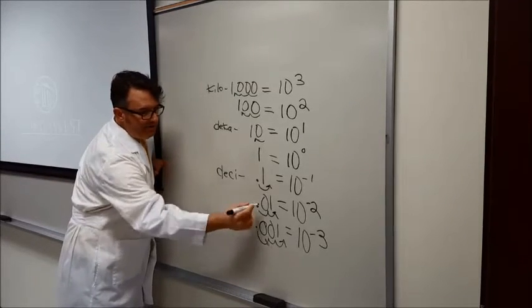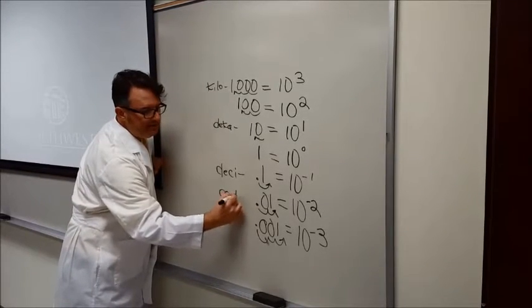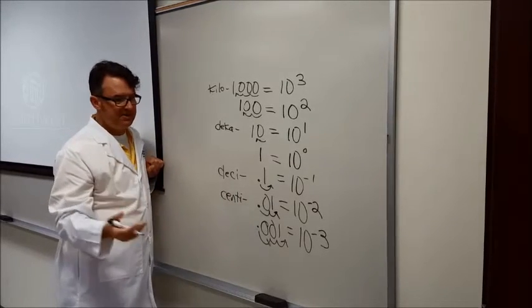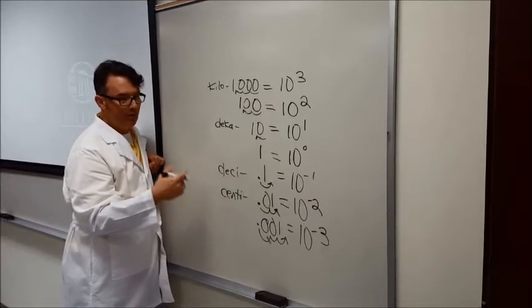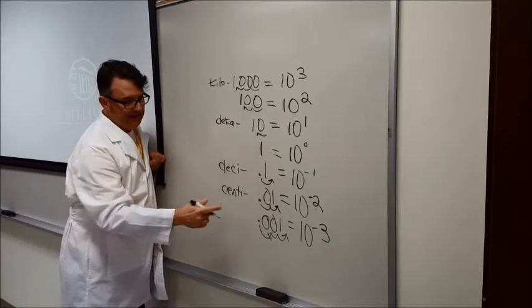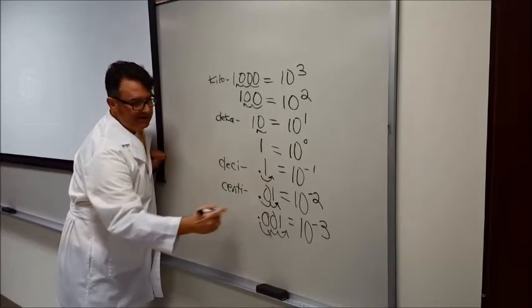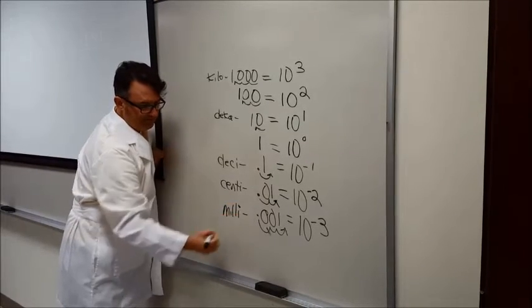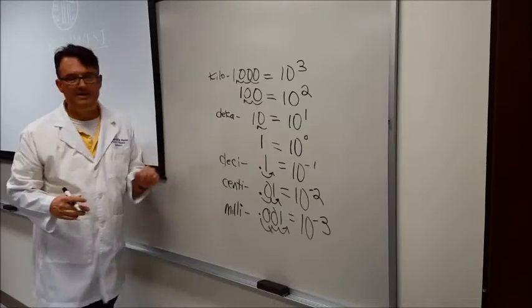And so 10 to the negative 2 is what? So if I want to know how many centimeters in a meter, there are 100. And what would this one be here? 10 to the minus 3. Milli means 10 to the minus 3.